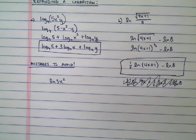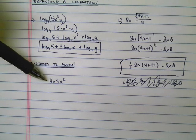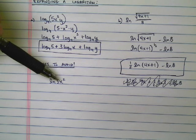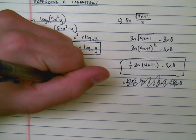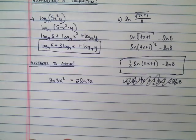Other mistakes that you want to avoid. It's often not unusual for people to do something like this. If I have the natural log of 3x squared, they'll see this x squared and they'll say, okay, well, that equals 2 times the natural log of 3x. And that's not correct.